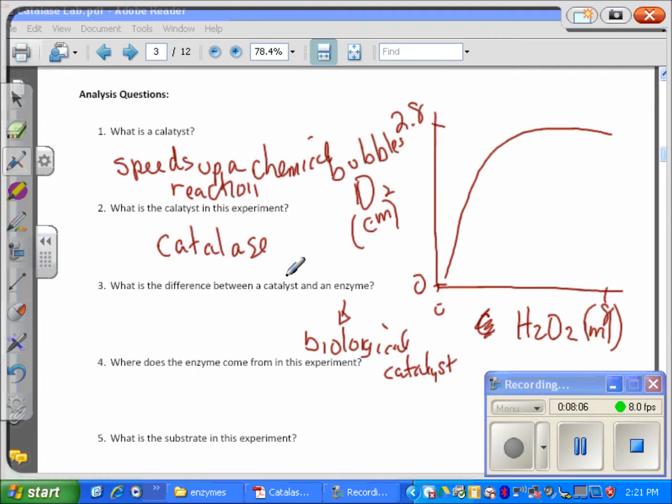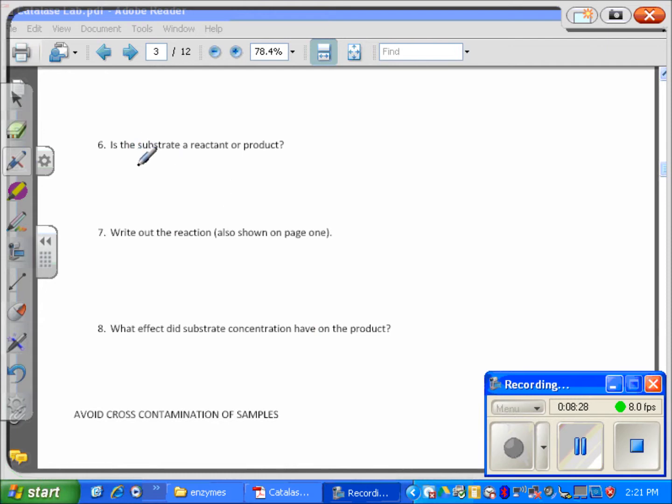All enzymes are catalysts, but some catalysts are things like magnesium sulfate or zinc - they're not enzymes. Where does the enzyme come from in this experiment? It comes from leeks. What is the substrate in this experiment? That would be the hydrogen peroxide.